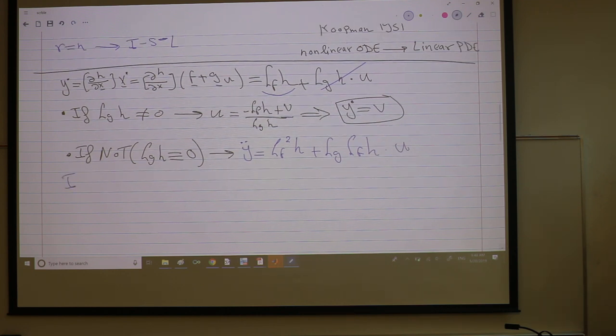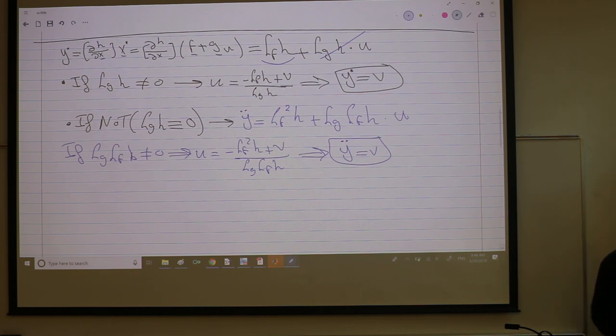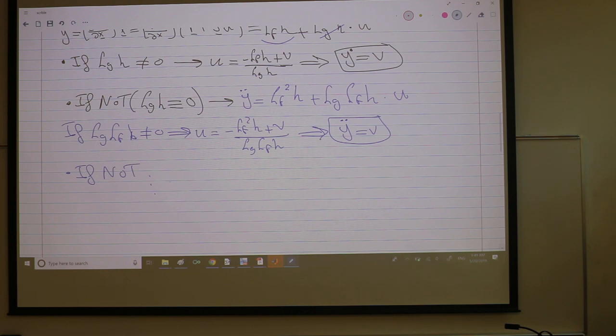And again, if the coefficient of u is non-zero, then I can define u to cancel this non-linear dynamics, yada yada, because I can divide by this guy. And if not, again, keep doing it until the r-th derivative.